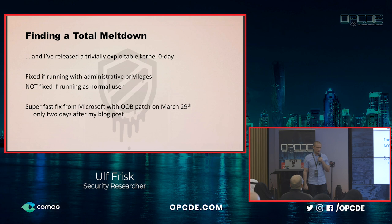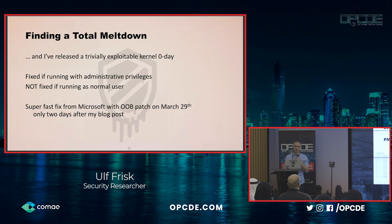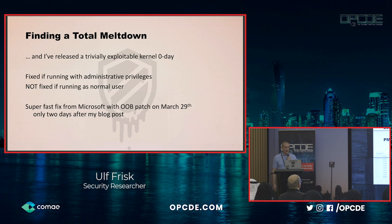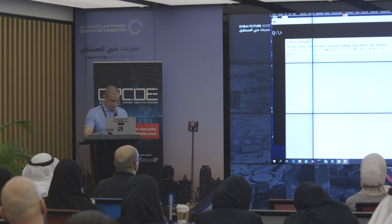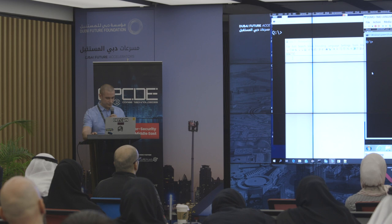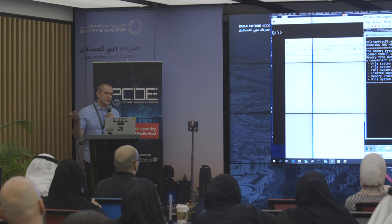But let's do a demo — let's show how I came to find this Total Meltdown vulnerability. Let's locate it by looking at the memory map, and in there we'll see that the PML4, which is the topmost paging structure in the page tables, had its self-referential entry mapped straight into user mode. I have a vulnerable virtual machine here. Let's start it and mount the Memory Process File System — I'm cheating a little bit today since I'm using the actual vulnerability to mount the file system.